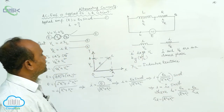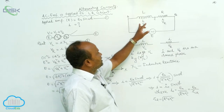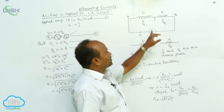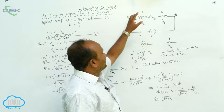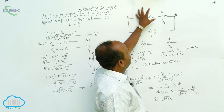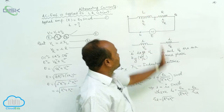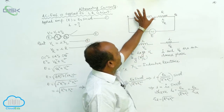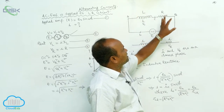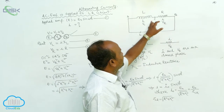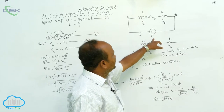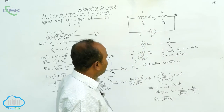Here in this case, the resultant of voltage VL and VR gives the total EMF. AC EMF is applied between the L and R, which are connected in series. The voltage across the inductor is VL and the voltage across the resistance is VR. The resultant of VL and VR gives the total EMF of the circuit.